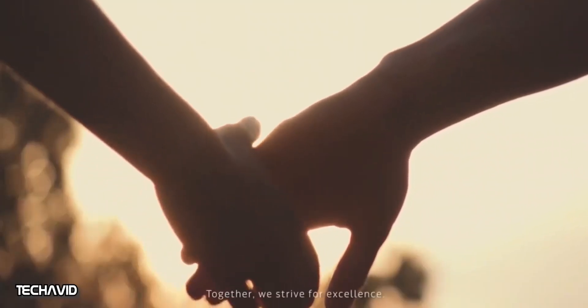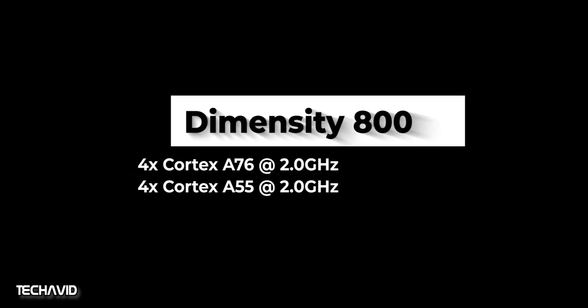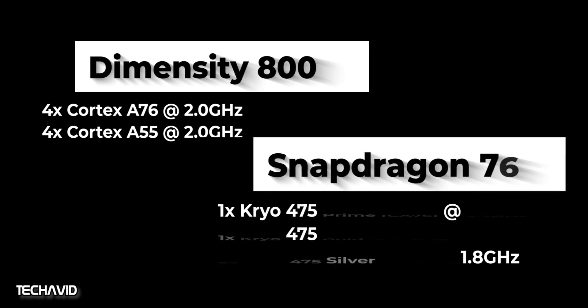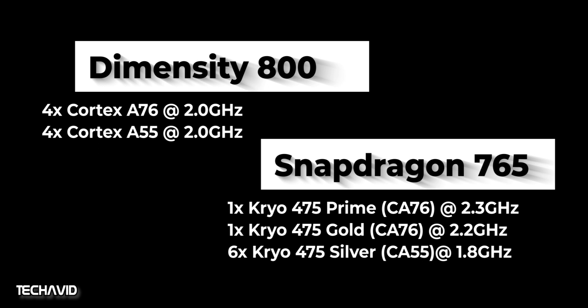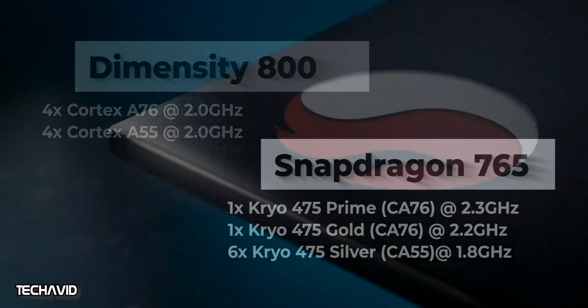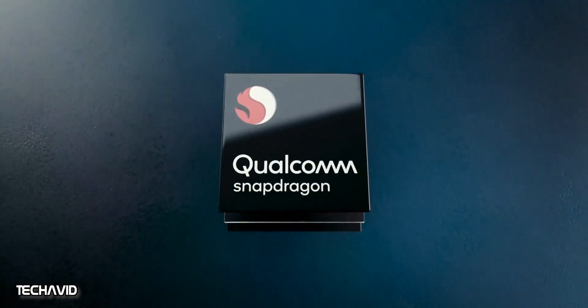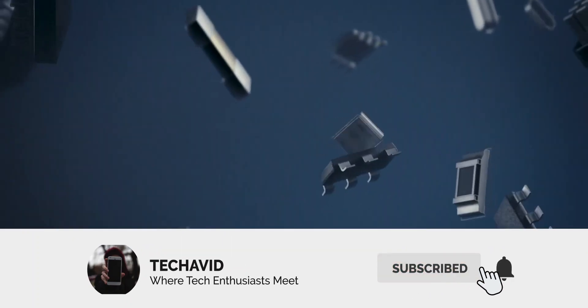As for CPU, the MediaTek Dimensity 800 has 4 big ARM Cortex-A76 cores clocked at up to 2GHz, paired with 4 little ARM Cortex-A55 cores clocked at up to 2GHz. Whereas the Qualcomm Snapdragon 765 has a prime core that goes up to 2.3GHz and another performance core that reaches 2.2GHz, with six Cortex-A55-based efficiency cores clocked at up to 1.8GHz. Both are not using the newer flagship ARM Cortex-A77 core, but this is what differentiates flagships from mid-range on both MediaTek and Snapdragon.